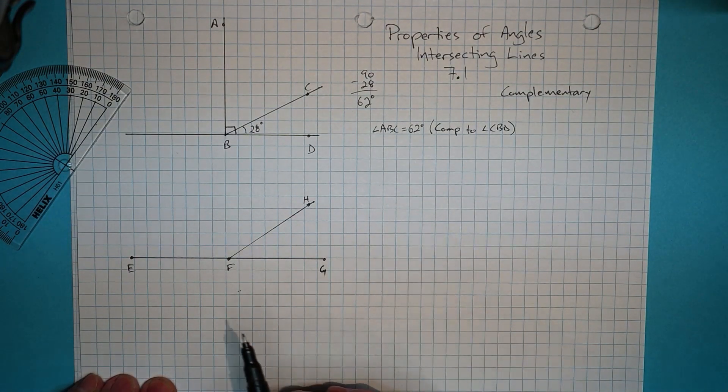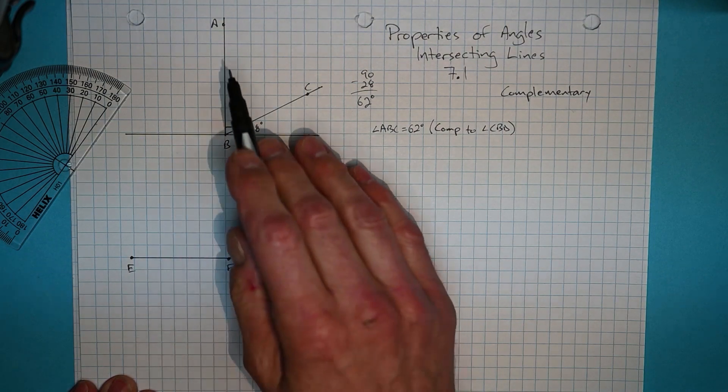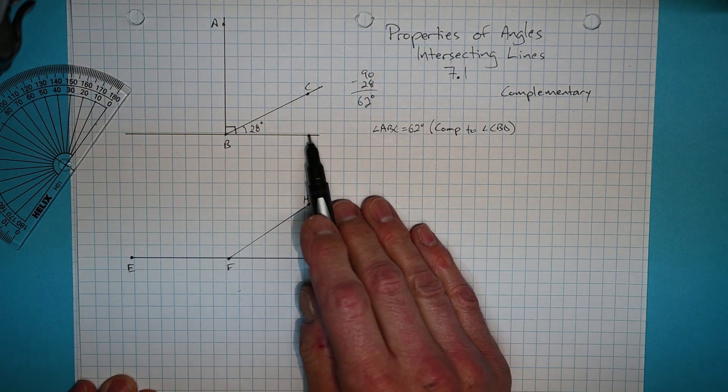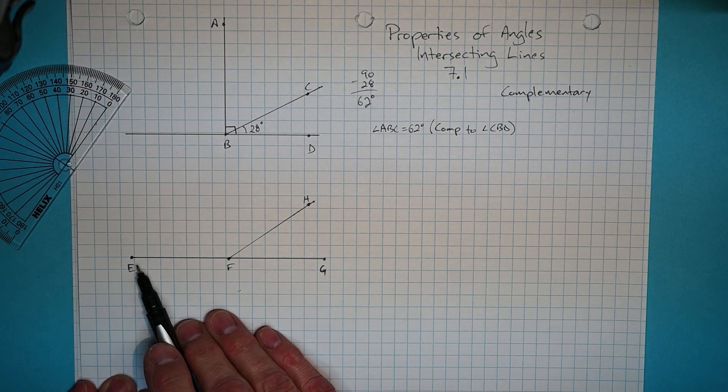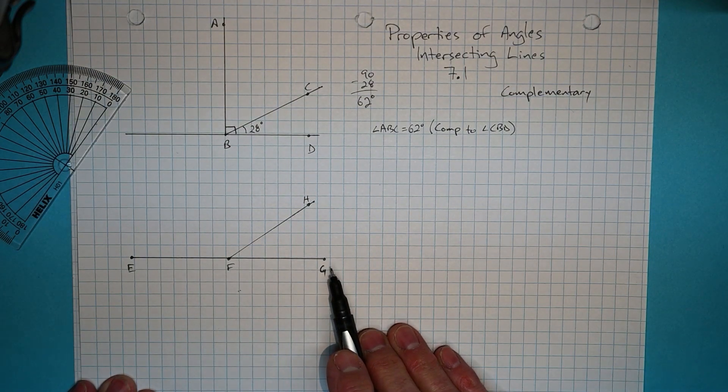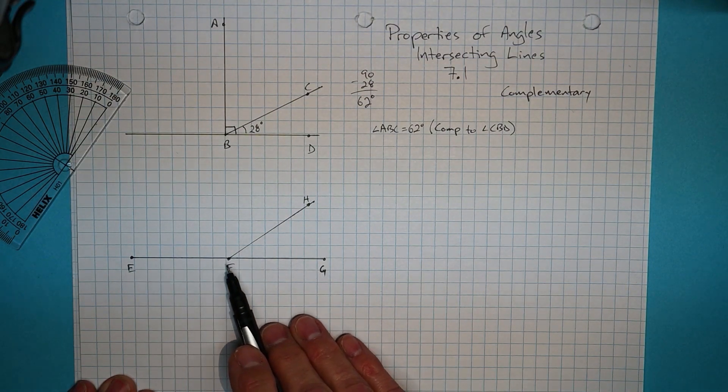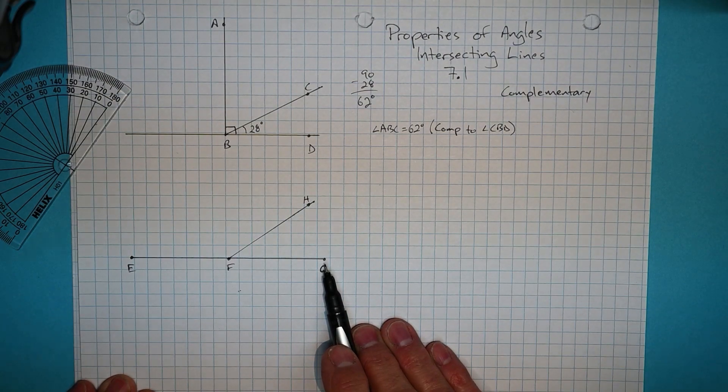Now a similar situation, a little bit different, is when instead of dealing with a 90 degree angle, we're dealing with a 180 degree angle. And angle EFG, in this case, is 180 degrees.